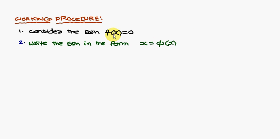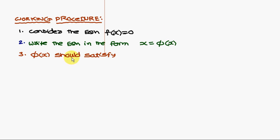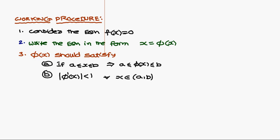The given equation has to be written in the form x = phi(x), a new function. This new function phi(x) should satisfy two conditions. The first condition is: if x lies between a and b, then phi(x) also lies between a and b.